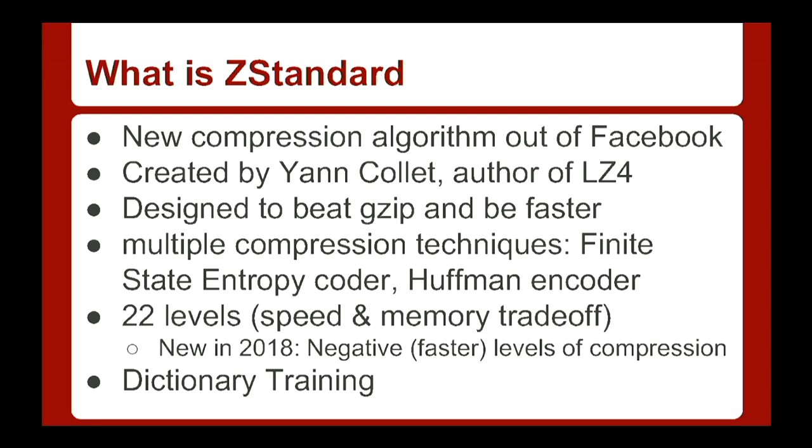ZStandard uses a combination of different compression techniques, including a finite entropy coder, a Huffman coder like you see in most other compression, and gives you more control than you have with GZIP. GZIP, which is available in ZFS, has levels one through nine — one being the fastest, nine being the slowest and providing more compression. ZStandard has 22 levels currently.